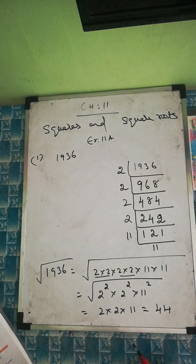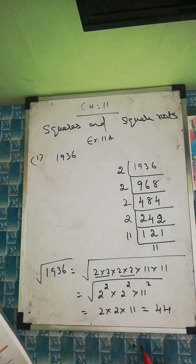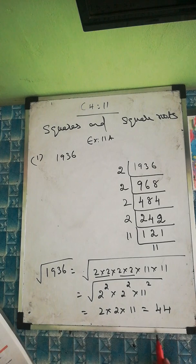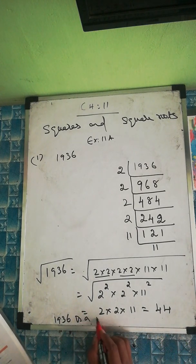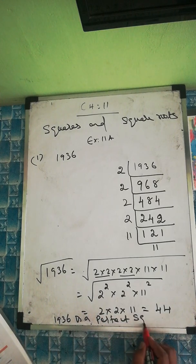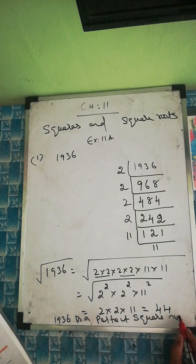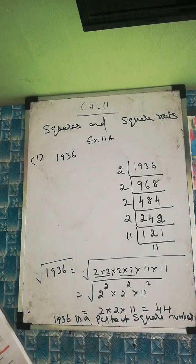The question asks whether we can use prime factorization to check if the numbers are perfect squares or not. So 1936 is confirmed to be a perfect square number. Now let's go to the second number: 1296.